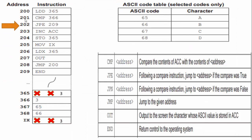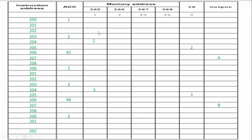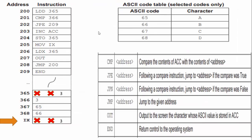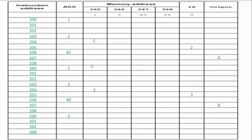Now 202 — following a compare instruction, jump to the address if the compare was true. It was true: the accumulator equals 366 from the previous instruction, so we're going to jump down to 209. However, I first need to document that this address executed — I put that in my trace table. I jumped to 209. Line 209 tells me end the program and return control to the operating system. I document 209 and we are done.